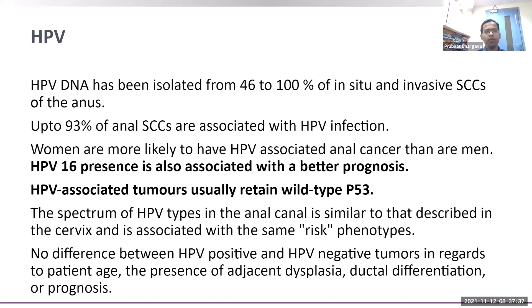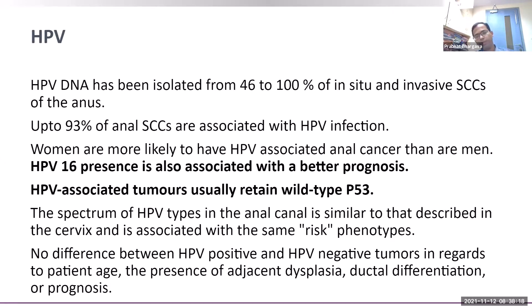HPV DNA has been isolated in 46 to 100 percent of in-situ lesions and invasive cancers; up to 93 percent of anal squamous cell carcinomas are associated with HPV infection. Women are more likely to have HPV-associated anal cancer compared to men. HPV 16 presence is associated with better prognosis. HPV-associated tumors are more chemo-responsive because they retain p53 wild type. The spectrum of HPV types in anal canal cancer is similar to those in cervix, involving HPV 16 and 18.